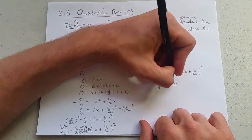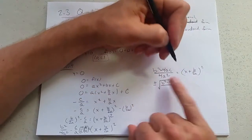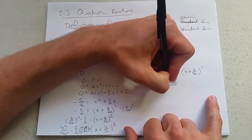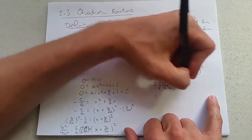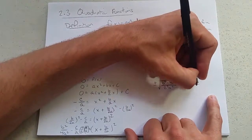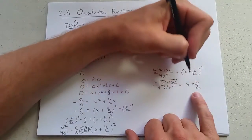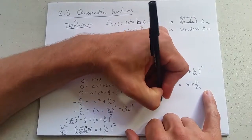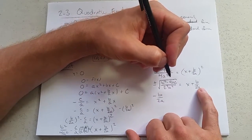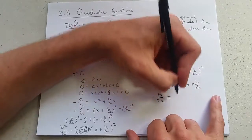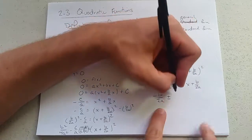This will start to look more familiar. 4a squared is 2 squared a squared. Now we're going to subtract minus b over 2a, plus or minus 2 squared a squared.